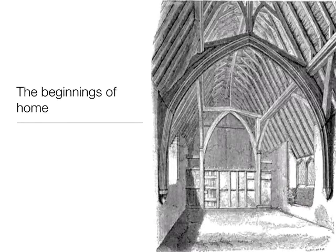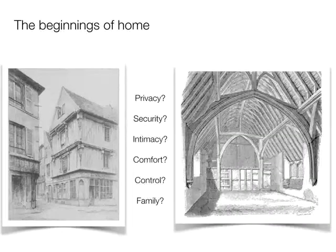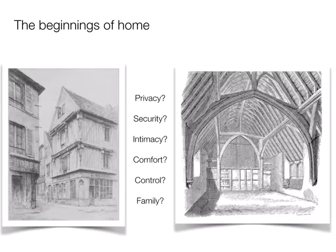What we don't see in this early home is a lot of privacy, comfort, or intimacy. There was security — protection from weather — and these free towns were relatively free from crime and invasion. But we definitely don't find that homeliness, those characteristics of home we listed on the blackboard. We don't find a nuclear family here in the way we think about it today. There were particular factors that caused the nuclear family to be spread out.